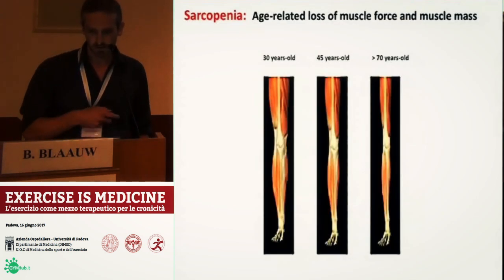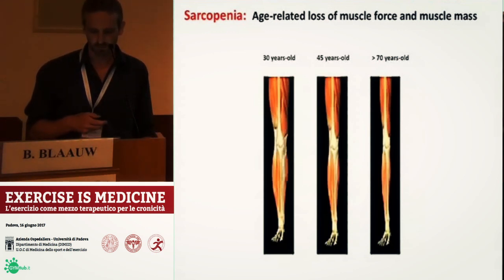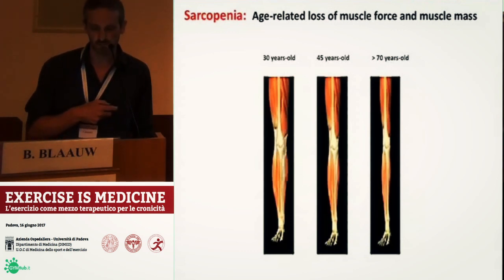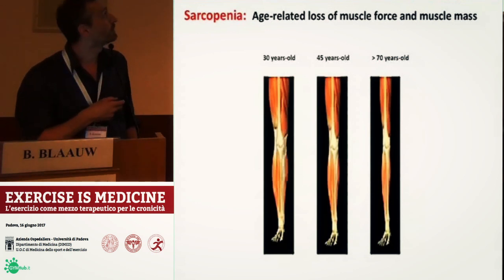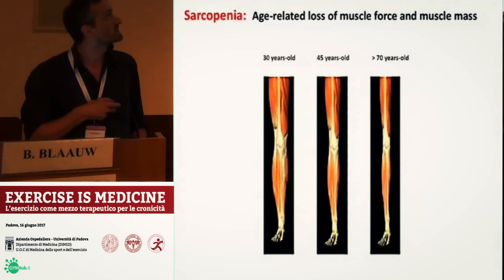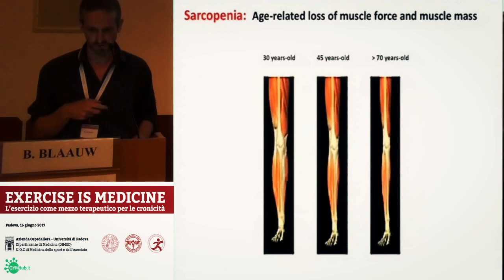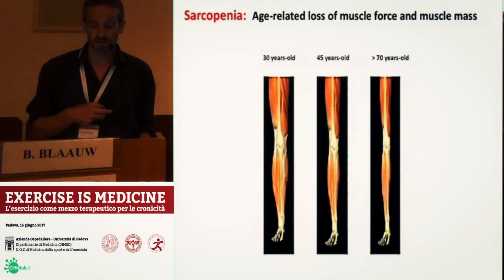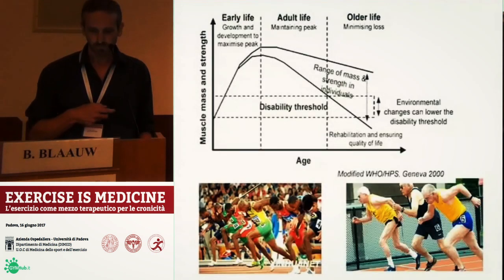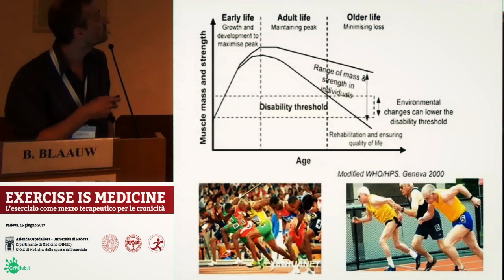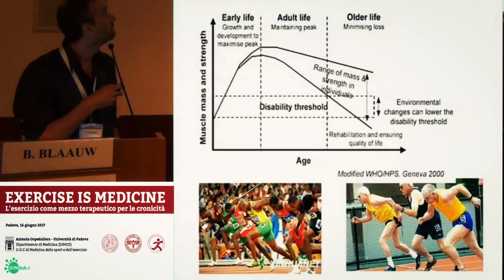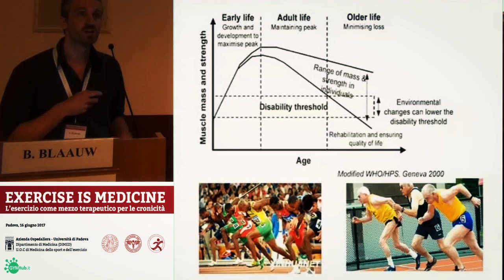Sarcopenia is a gradual loss in muscle mass and also in muscle function. It starts relatively early — at 45 years old you can already see some mass being lost. When you're 70, you have a very significant muscle wasting. And in this graph you can nicely see a summary of how muscle mass and muscle strength are actually changing over time.